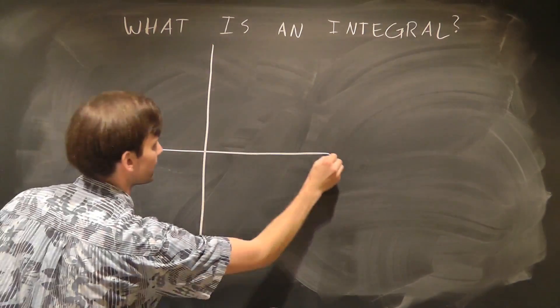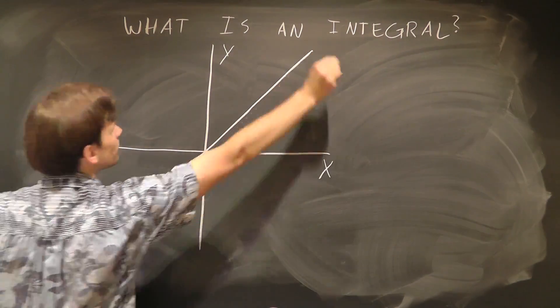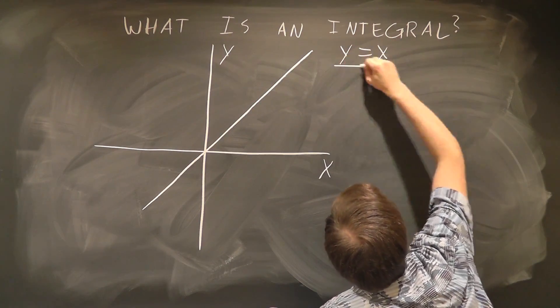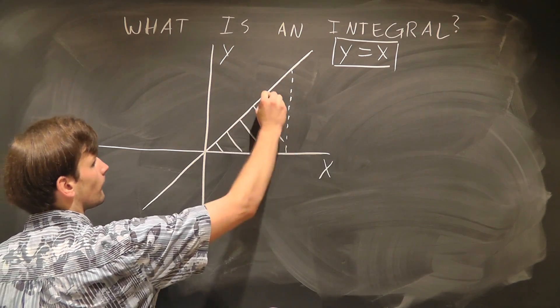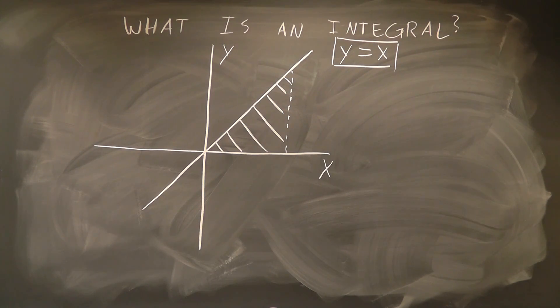Well, if we draw an XY axis and a single line across the axis following the equation y equals x, the integral is simply the area under the curve, or the area within this shaded triangular region.